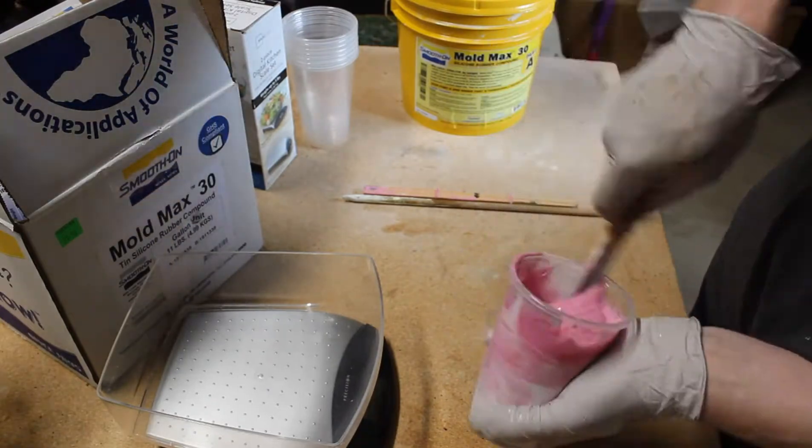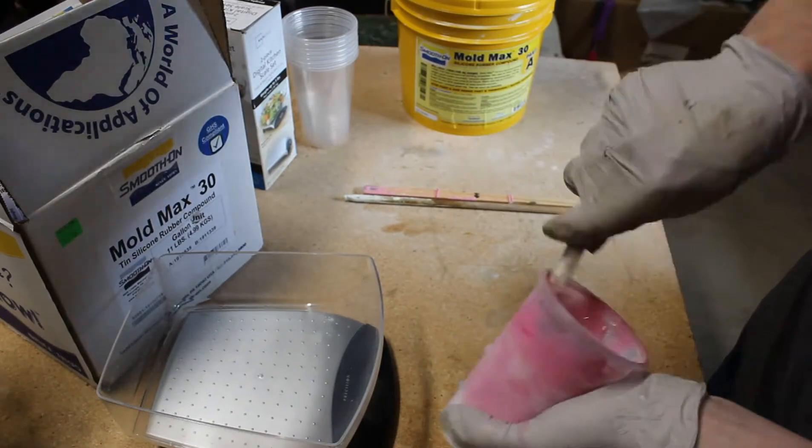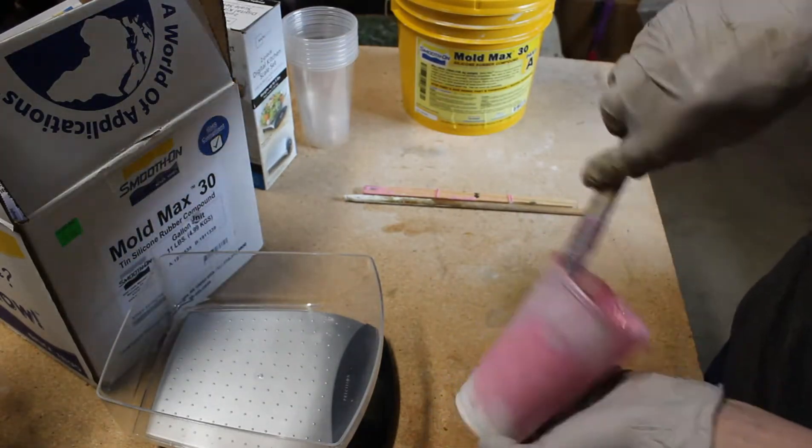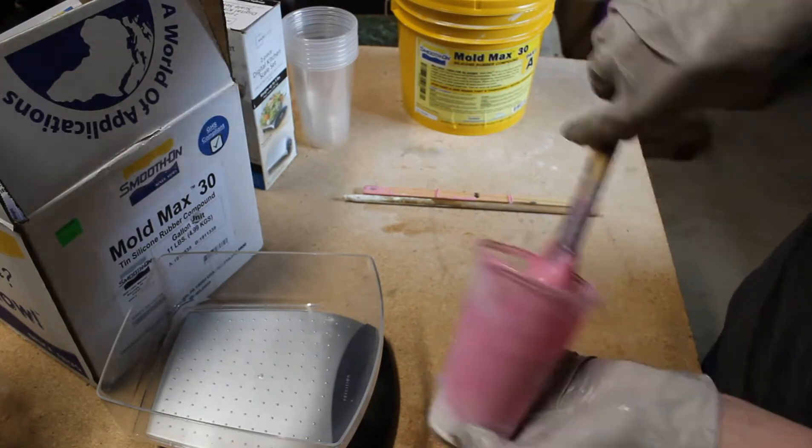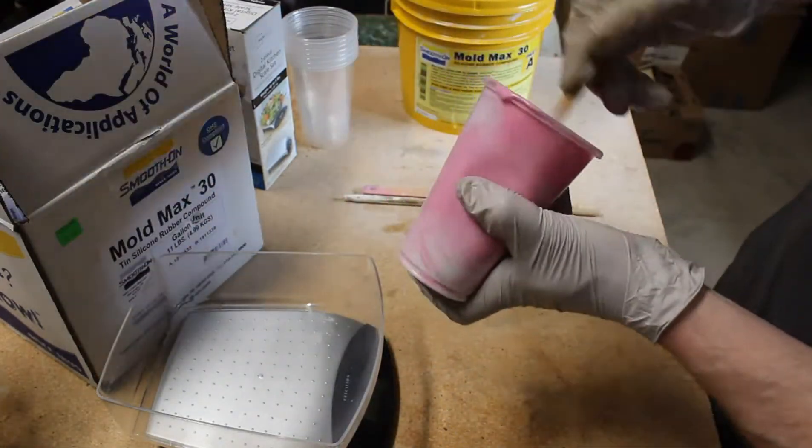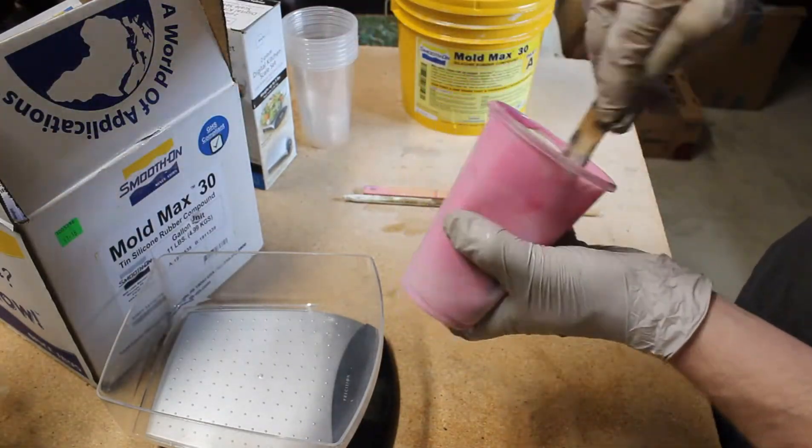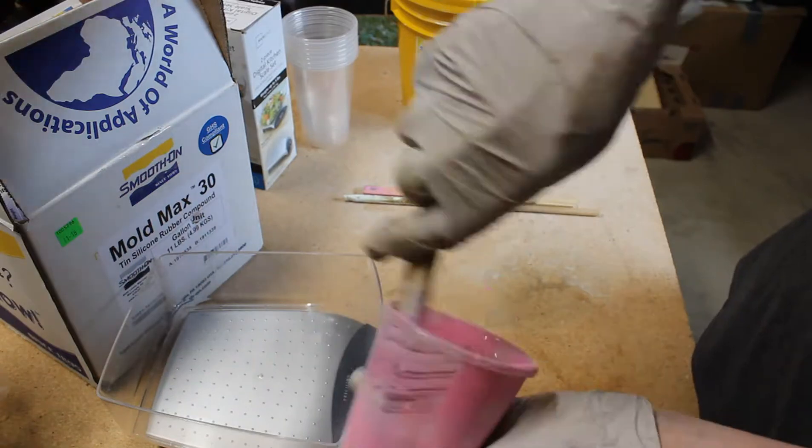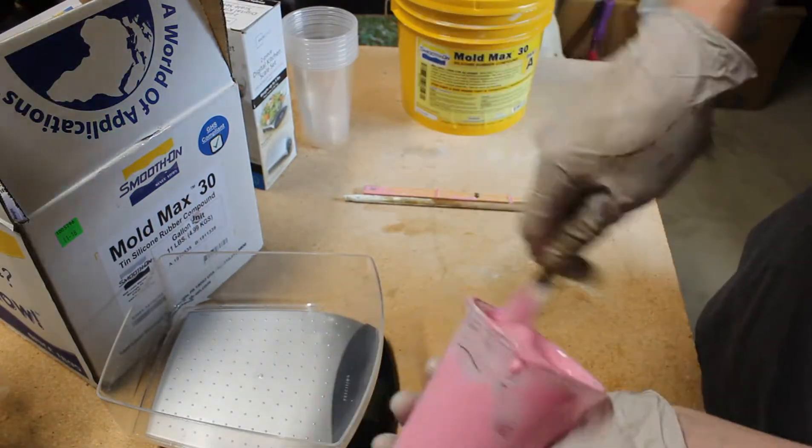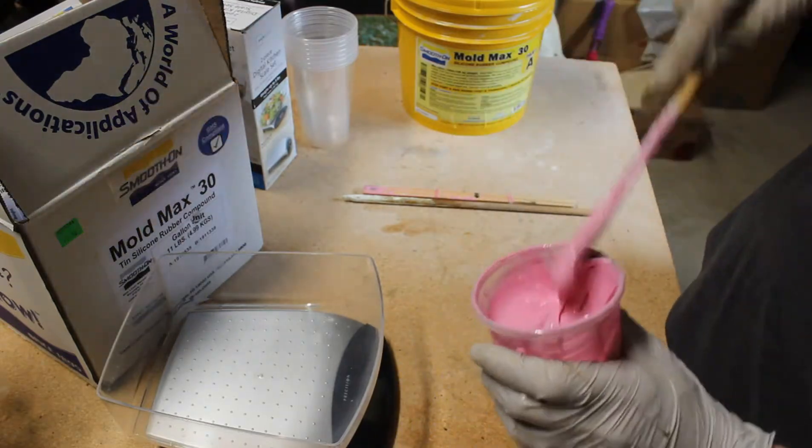As you're scraping the sides and scraping the bottom, make sure you scrape your tool off on the edge of the cup to make sure you don't have any that's not mixing against your stick. You can see this takes on a Nestle Quick strawberry rabbit kind of color. You just keep going, scrape the sides, get it going. Usually only do this for about three minutes or so. Once this is mixed up, you have the option of degassing it if you have a degassing chamber.